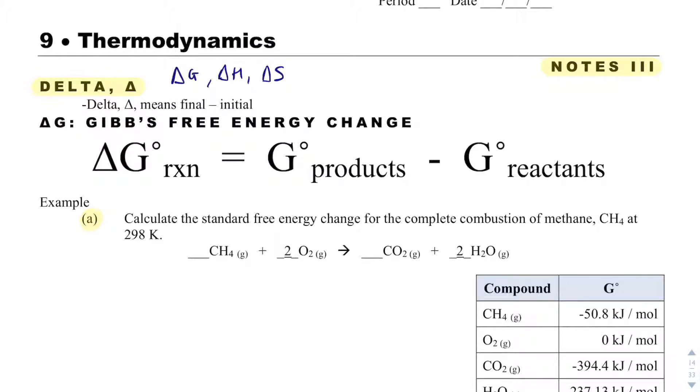So delta means final minus initial, or products minus reactants, and if I want to get the delta G of a reaction, I could add up all the G's for the products, subtract it from the Gibbs energy of the reactants. On your formula sheet on the AP test, you'll see these capital sigmas, and those mean add up all the products. So add up all your products, and then subtract it from all your reactants.